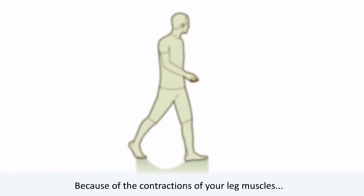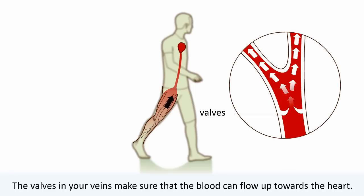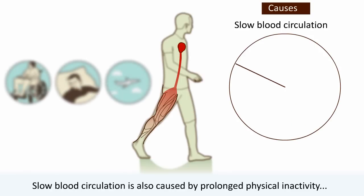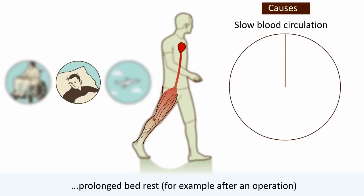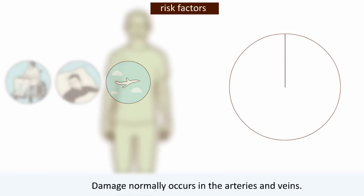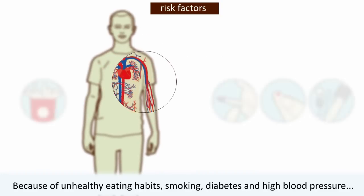Because of the contractions of your leg muscles, your blood is pumped from your legs towards the heart. The valves in your veins make sure that the blood can flow up towards the heart. If this muscle pump doesn't work properly, the blood will flow slowly. Slow blood circulation is also caused by prolonged physical inactivity, prolonged bed rest after an operation, and after a long flight.